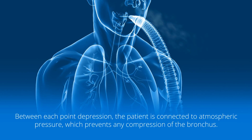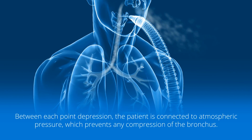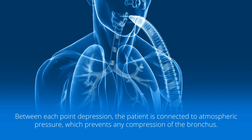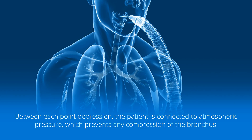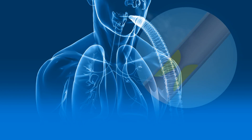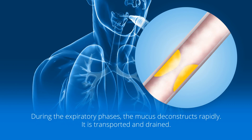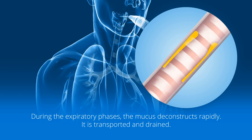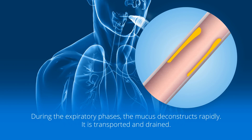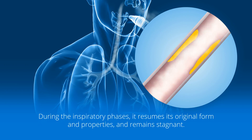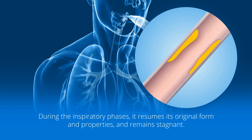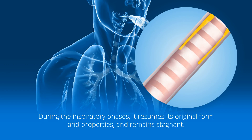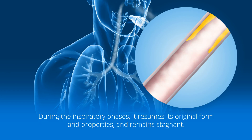Between each point depression, the patient is connected to atmospheric pressure, which prevents any compression of the bronchus. During the expiratory phases, the mucus deconstructs rapidly — it is transported and drained. During the inspiratory phases, it resumes its original form and properties and remains stagnant.